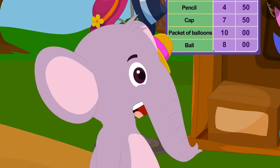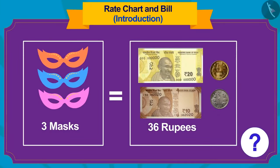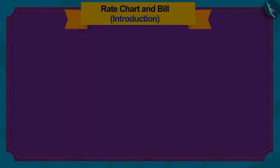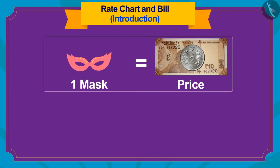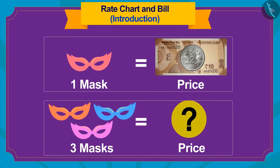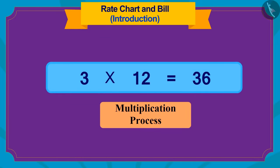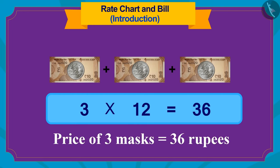Appu was shocked. He did not understand how Banni found this out. Children, do you know how Banni found this out? The price of one mask is 12 rupees. If we want to know the cost of three masks, we use the process of multiplication. 3 times 12 is 36, so the cost of three masks becomes 36 rupees.